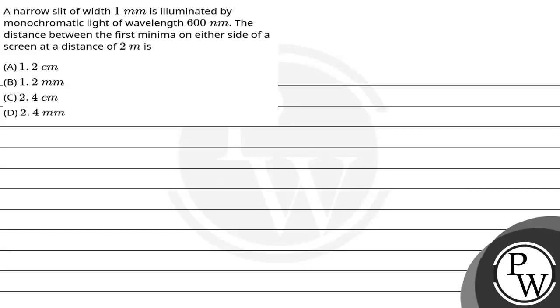Hello, let's read this question. The question says: a narrow slit of width 1 mm is illuminated by monochromatic light of wavelength 600 nm. The distance between the first minima on either side of the screen at a distance of 2 m is...